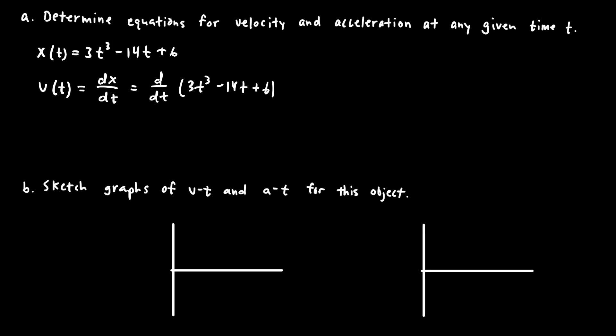We'll handle each term separately, taking the derivative one at a time. For the first term, we multiply the coefficient and the exponent together: 3 times 3 gives 9t, and we subtract 1 from the exponent, so 3 minus 1 gives an exponent of 2. For the second term, 14 times 1 keeps the coefficient as 14, and t to the 0 is just 1, so the second term is 14. The last term is a constant 6, and the derivative of a constant goes away. So the velocity equation is v(t) = 9t squared minus 14.